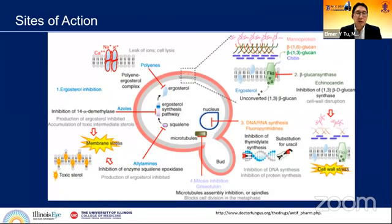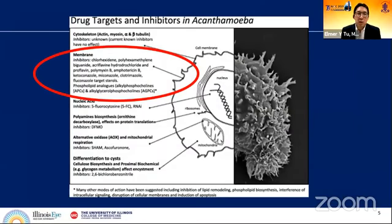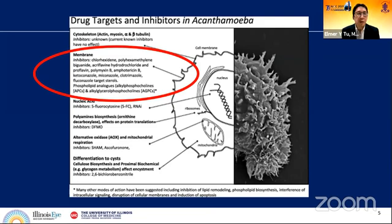This chart shows different anti-fungal areas of activity — most concentrate on either the cell wall or the cell membrane. In terms of drug targets in acanthamoeba, the vast majority affect the cell membrane, including chlorhexidine, PHMB, amphotericin B, and some azoles which target sterols. The phospholipid analogs — of which miltefosine is one — also act in this area but additionally in other areas around the acanthamoeba, which partly explains its effectiveness.